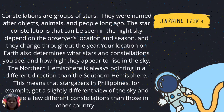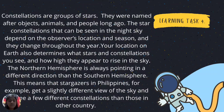An example answer for Learning Task Number 4: Constellations are a group of stars named after objects, animals, and people long ago. The star constellations that can be seen in the night sky depend on the observer's location and season, and they change throughout the year. Your location on Earth also determines what stars and constellations you see and how high they appear to rise in the sky. The northern hemisphere always points in a different direction than the southern hemisphere — stargazers in the Philippines, for example, get a slightly different view of the sky and can see different constellations than those in other countries.